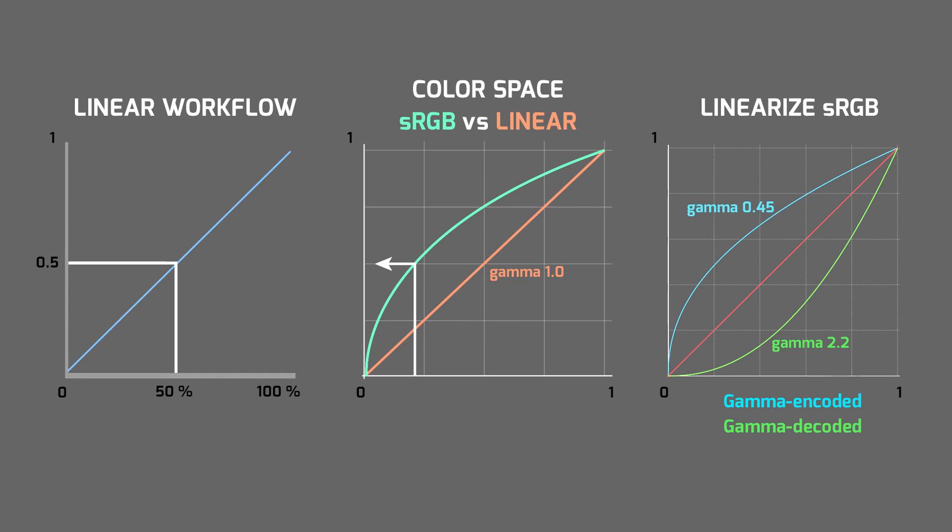And after that, as you can see on the graph, gamma override with a value of 1.0 works the same way as a linear workflow, so it produces correct values for material properties exactly as we need.